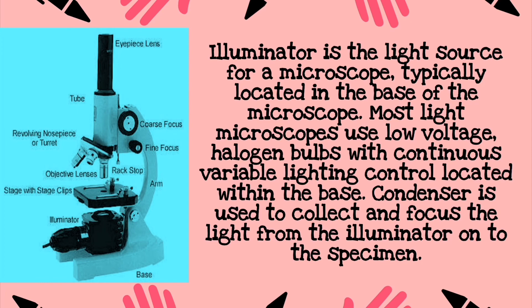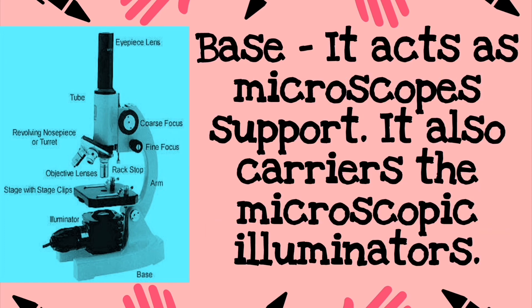Next is the illuminator, the light source for a microscope, typically located in the base. Most light microscopes use low-voltage halogen bulbs with continuous variable lighting control located within the base. The condenser is used to collect and focus the light from the illuminator onto the specimen.